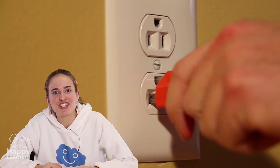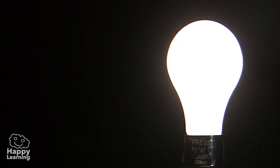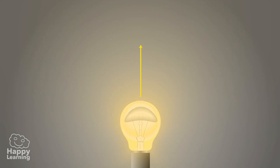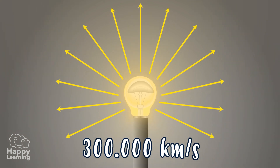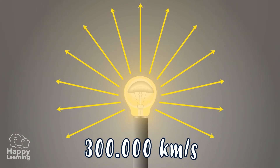The great majority of artificial lights work with electric energy. Light always travels in a straight line and in all directions and reaches a speed of 300,000 kilometers a second.